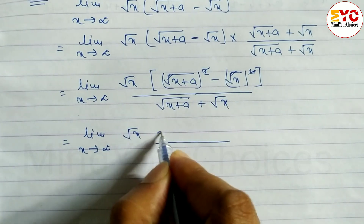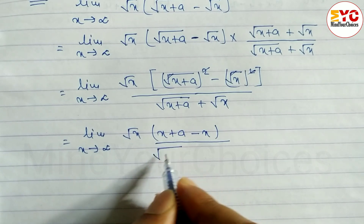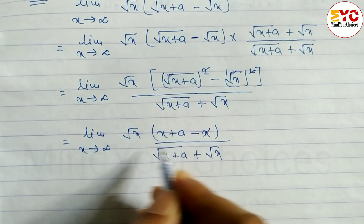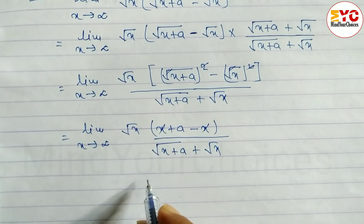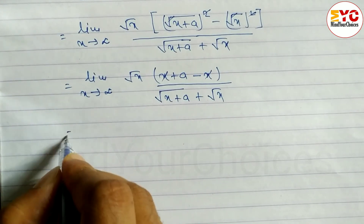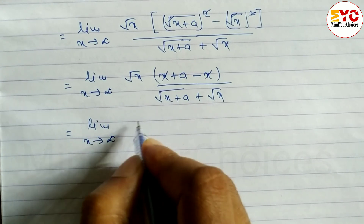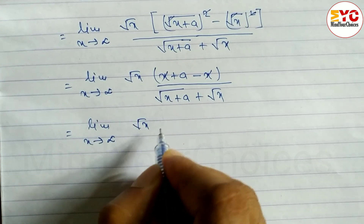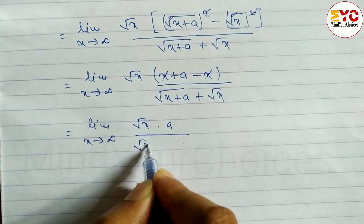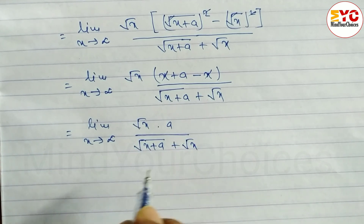What remains in the numerator is x + a minus x, so the x terms cancel leaving just a. So we have: limit x tends to infinite of √x times a divided by [√(x + a) plus √x].